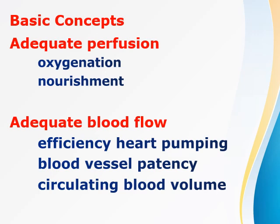Adequate blood flow is dependent on the following factors. One is efficient heart pumping — the more efficient the pumping of the heart, the more likely that blood will reach the periphery. Second is blood vessel patency. If blood vessels are narrowed, such as in conditions of atherosclerosis, blood flow towards the periphery would be obstructed.